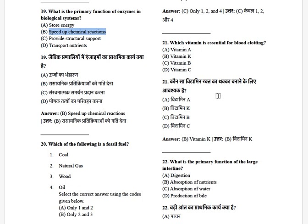Which vitamin is essential for blood clotting? The options are: A, K, B, and C. The answer is Vitamin K.